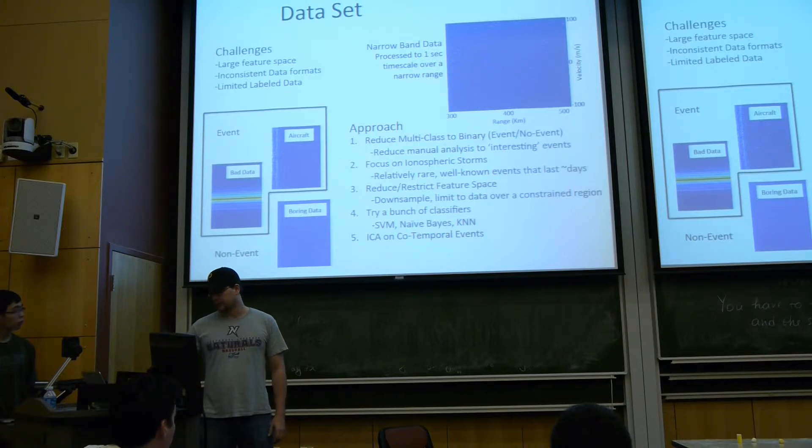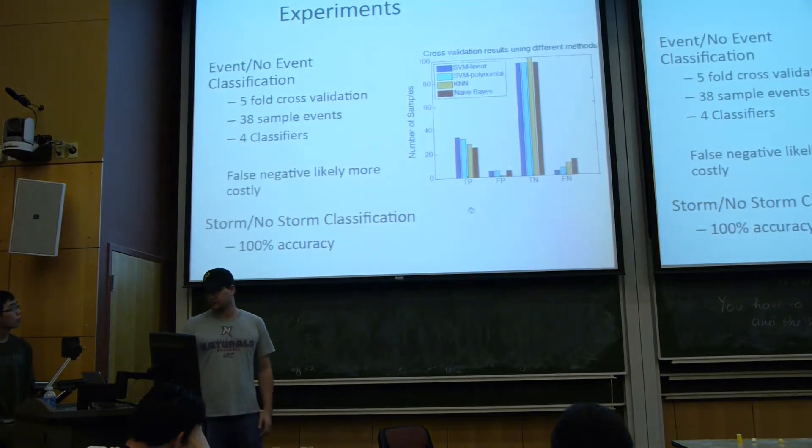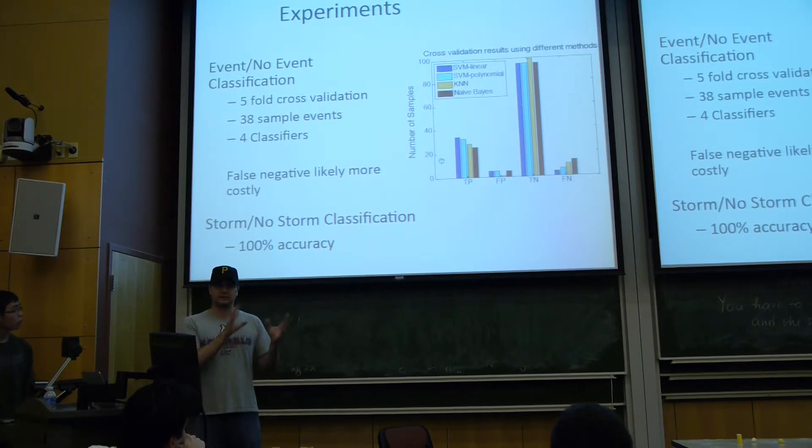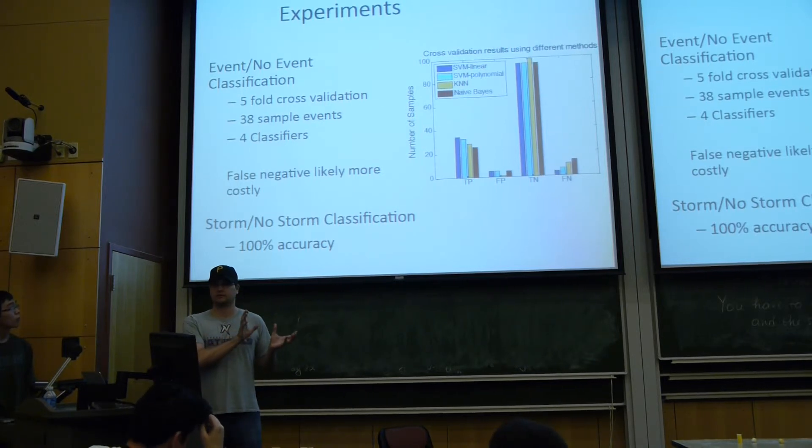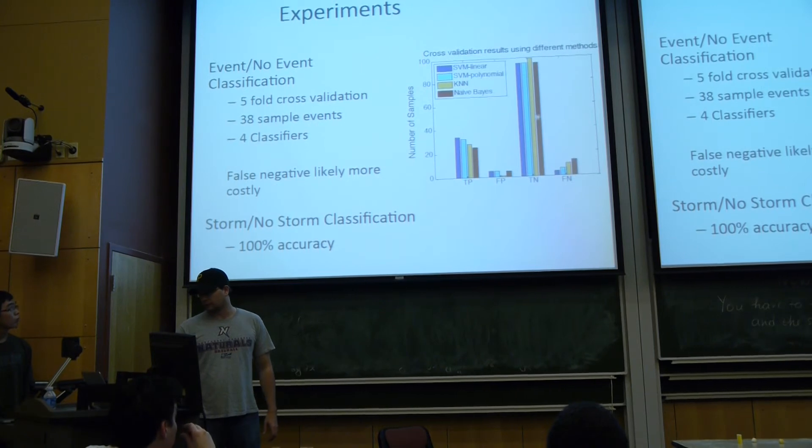We ran these through a variety of classifiers. With five-fold cross-validation, we were able to distinguish these events and non-events, which is basically any type of interesting event or bad data, fairly well over our set.